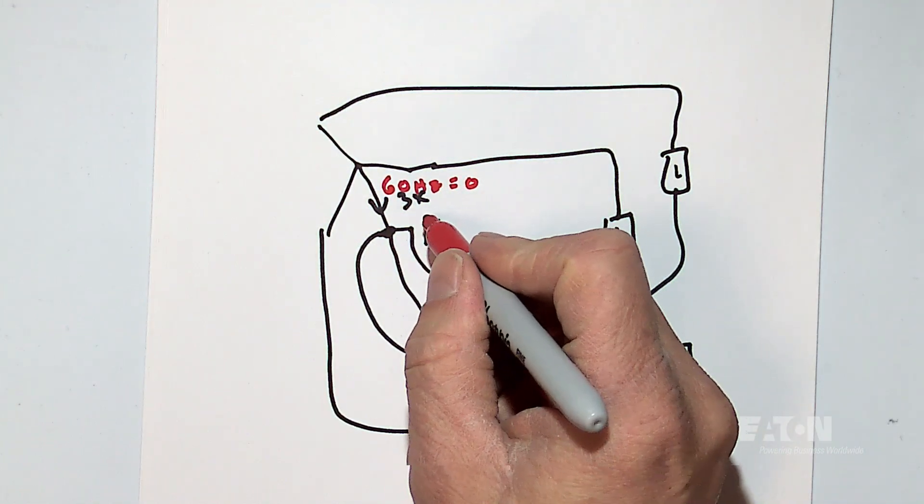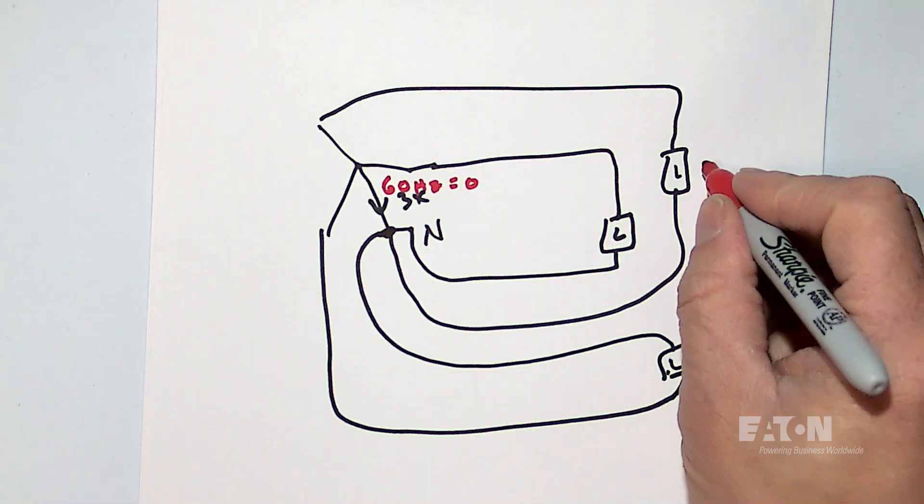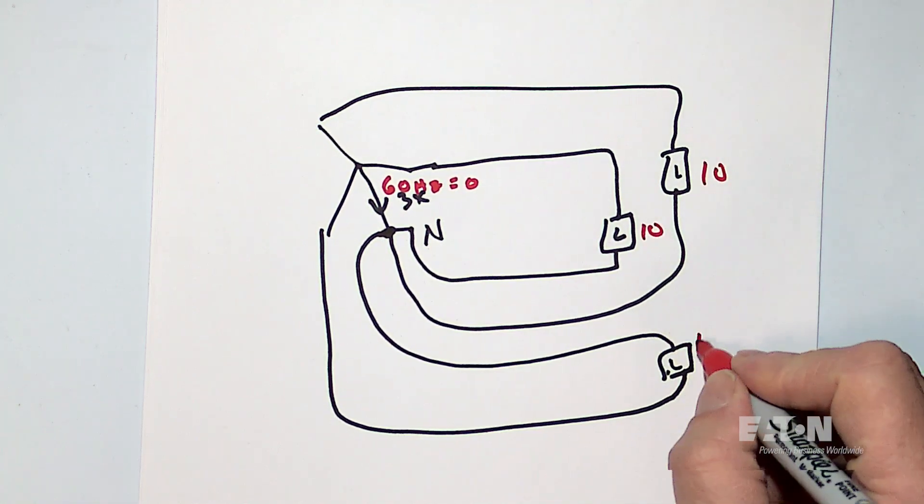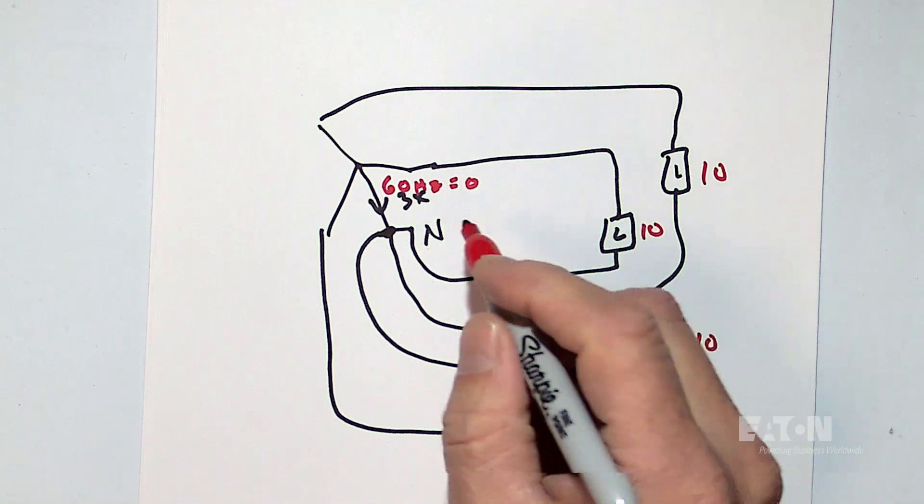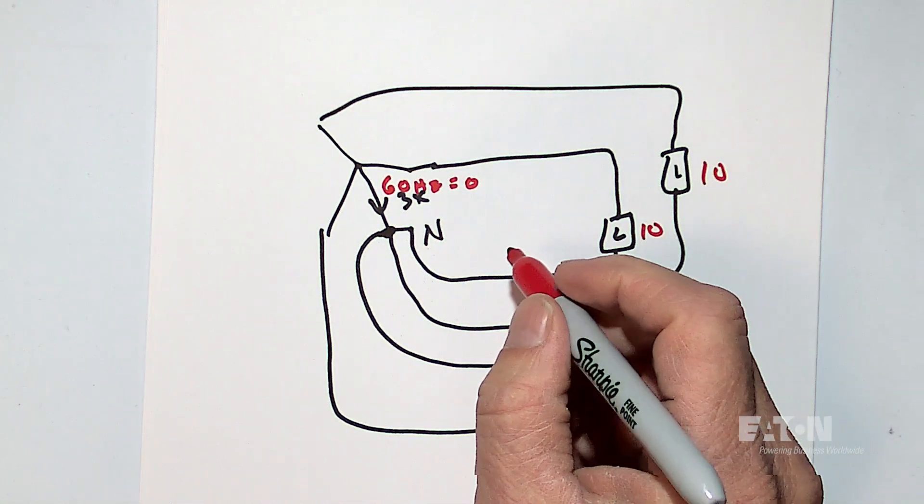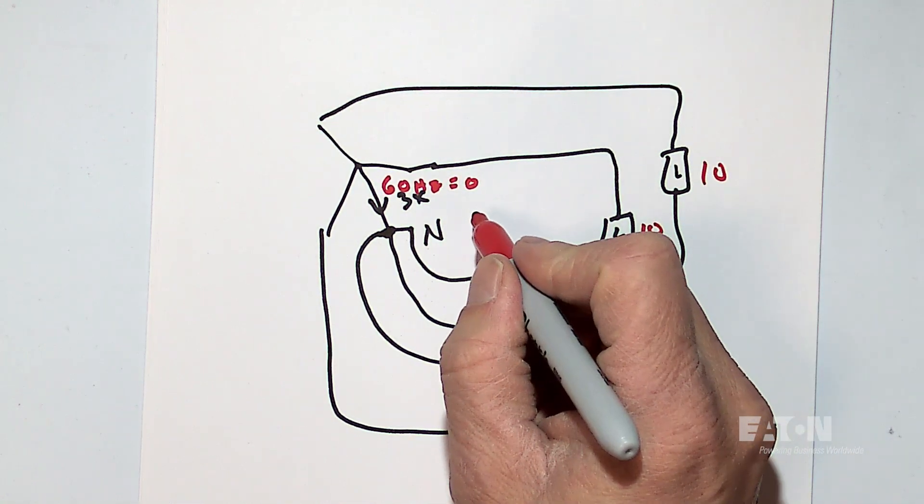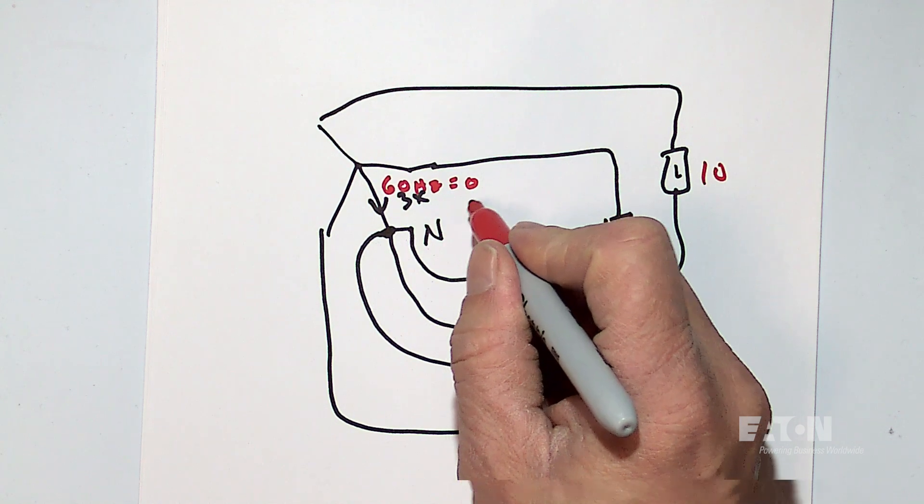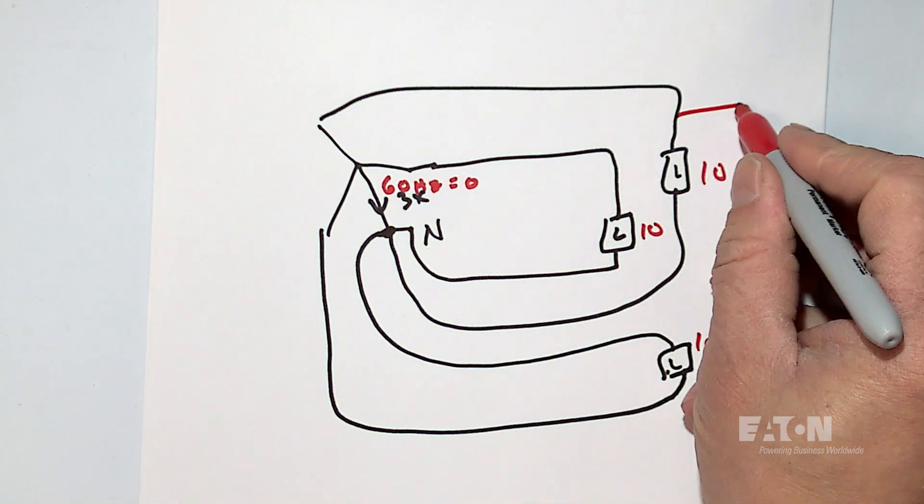But third harmonic could be three times that. So again, if we go 10 amps on each phase, and let's just say the 60 hertz mostly added up to zero. But let's say there was a little bit left on phase A just from another single phase load that was over here, maybe.